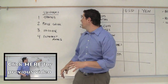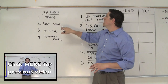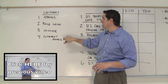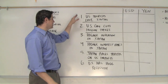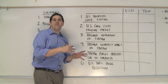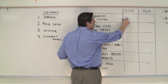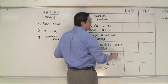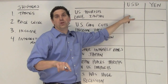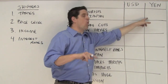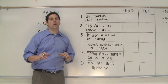In the last video we learned about the shifters of foreign exchange: tastes and preferences, price level, income, and interest rates. Your job now is to use them. I have for you six different examples of things that affect the demand and supply for two different currencies — the United States dollar and the Japanese yen. Your job is to figure out will the United States dollar appreciate or depreciate, or the yen appreciate or depreciate. Let's do the first one together so I can show you exactly what I'm looking for.